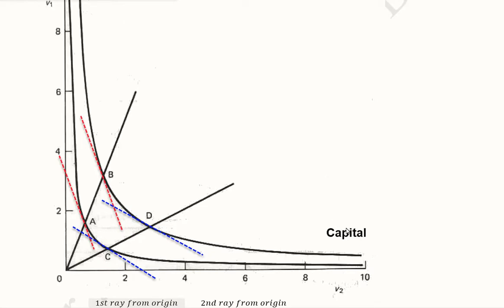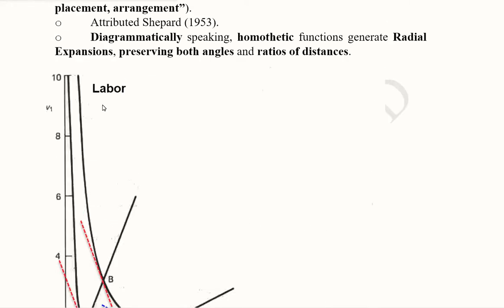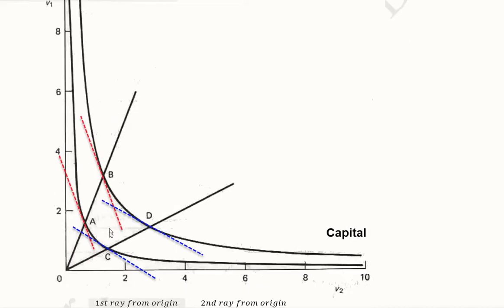Let us focus on this diagram of a homothetic production function. Capital is plotted on the x-axis and labor on the y-axis. We have two isoquants here, this one and that one.